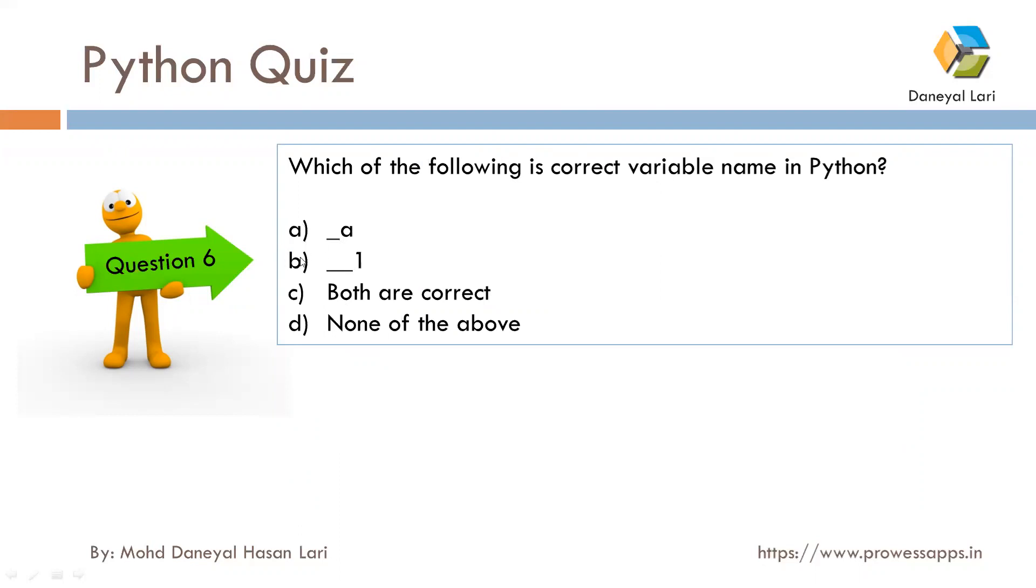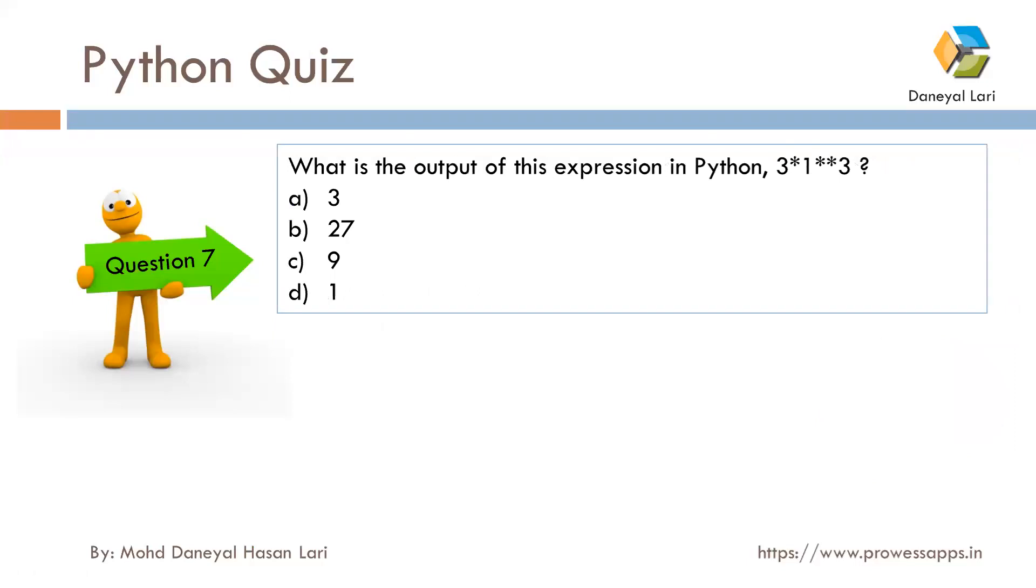Next question was: what is the output of the following expression? 3*1**3. You need to understand which part will execute first. The exponential has higher execution order, so it will first calculate the cube of 1, which is 1, and after that it will multiply with 3. So the answer will be 3.